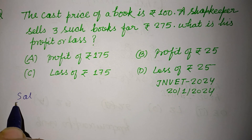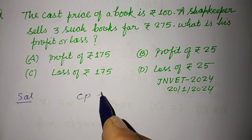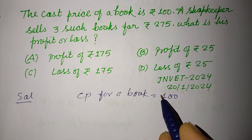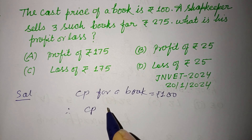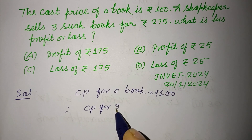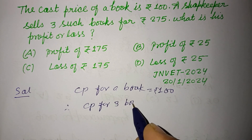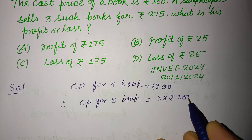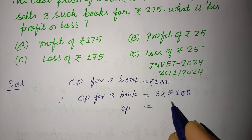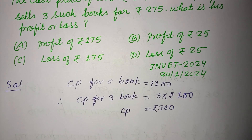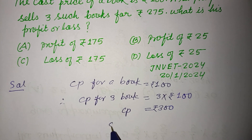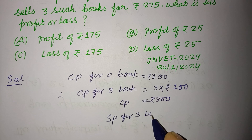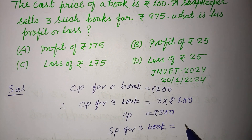So students, here CP for a book is given to us as Rs. 100, therefore CP for 3 books equals 3 into Rs. 100. So CP is Rs. 300 for 3 books, and selling price for 3 books — SP for 3 books — is Rs. 275.